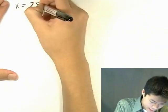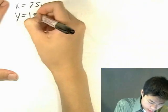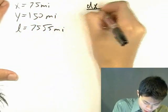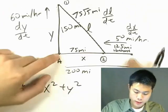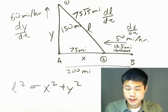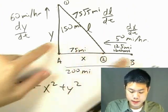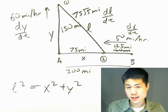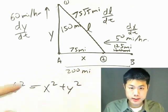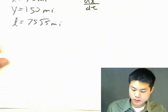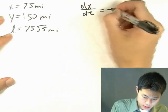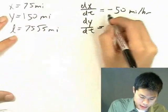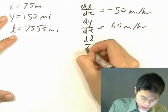So to summarize: X equals 75 miles, Y equals 150 miles, L equals 75 root 5 miles. Now, because we're interested in X — the horizontal gap between car two and city A — that distance is shrinking as the car approaches city A. Therefore dx/dt is negative 50 miles per hour, dY/dt is positive 60 miles per hour, and dL/dt is what we're solving for.